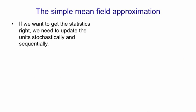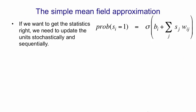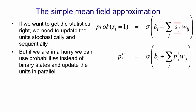If we want to get the statistics right, we need to update the units stochastically and sequentially. The update rule is: the probability of turning on unit i is the logistic function of the total input it receives from the other units and its bias, where sj, the state of another unit, is a stochastic binary thing. Instead of using that rule, we keep a real value between 0 and 1 — a probability — where the probability at time t+1 is the output of the logistic function applied to the bias plus the sum of all the other probabilities at time t times the weights. So we're replacing the stochastic binary thing with a real-valued probability.